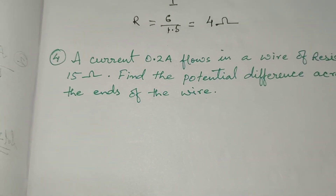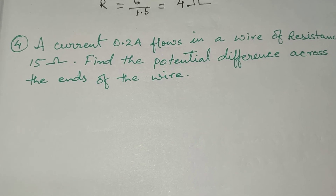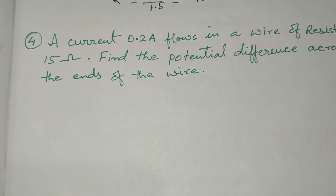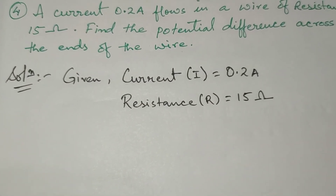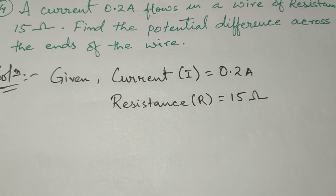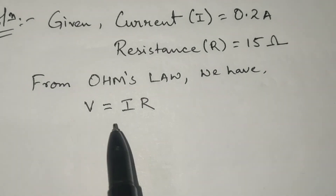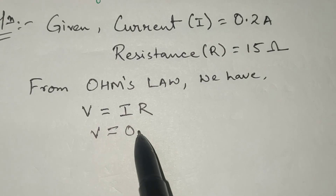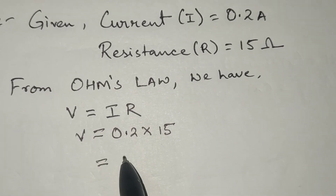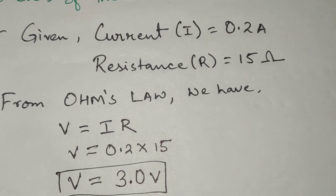The last question for exercise 9B: a current of 0.2 ampere flows in a wire of resistance 15 ohms. Find the potential difference across the ends of the wire. Given: current is 0.2 ampere, resistance R is 15 ohms. From Ohm's law, V equals IR. Substituting: V equals 0.2 ampere multiplied by 15 ohms. So 15 into 0.2 is 3.0 volts. This is our answer.